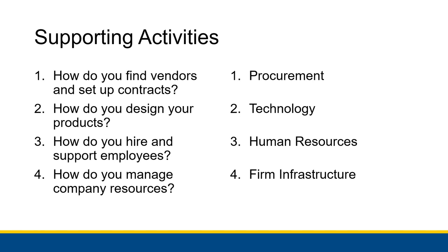Each of those questions is answered by the four supporting activities Porter identified. Procurement manages finding vendors and setting up contracts. Technology addresses how you design your products. Human resources focuses on hiring and supporting employees. And firm infrastructure helps in the management of company resources. Though these supporting activities don't directly contribute to production, they are still very necessary — without them, you still wouldn't be able to produce your products or services.